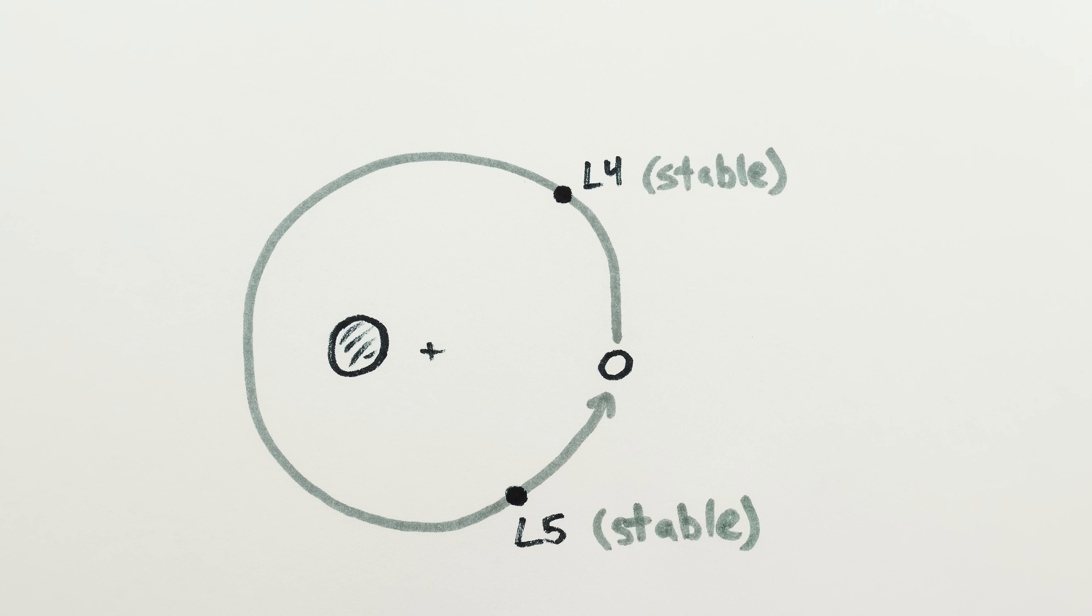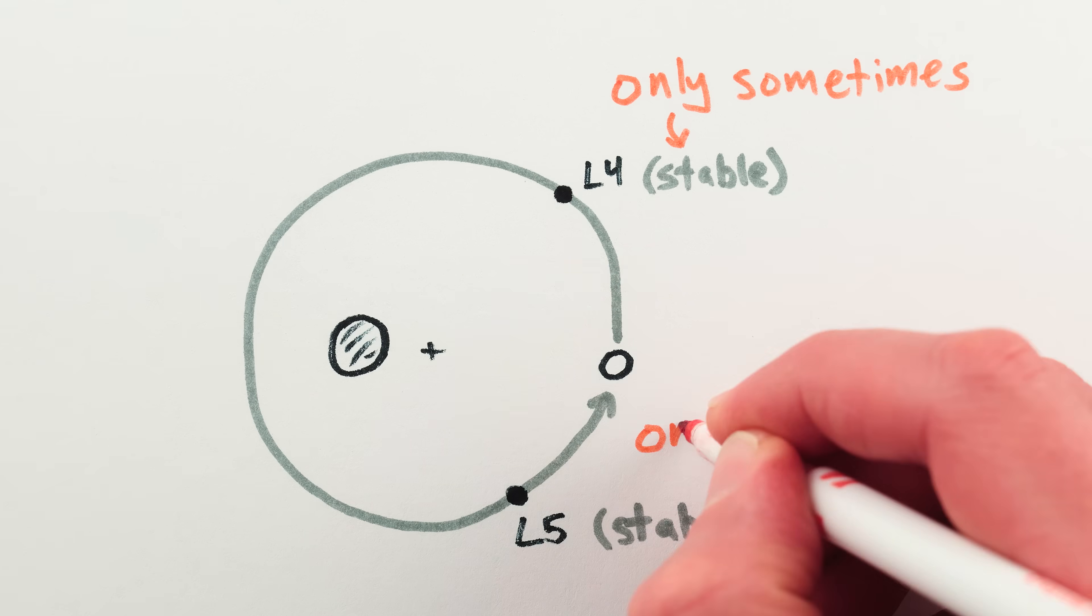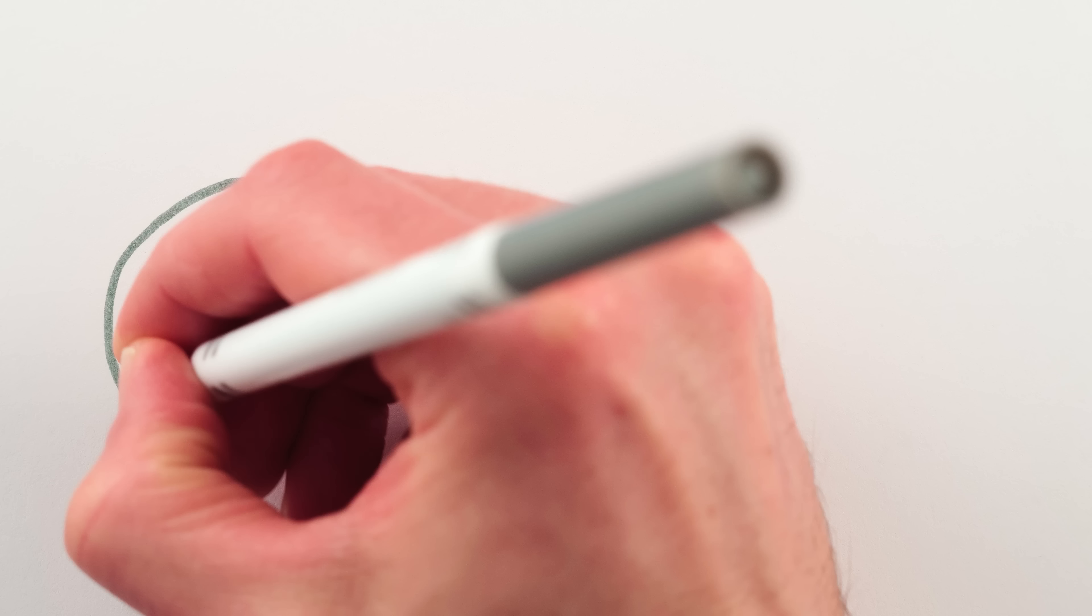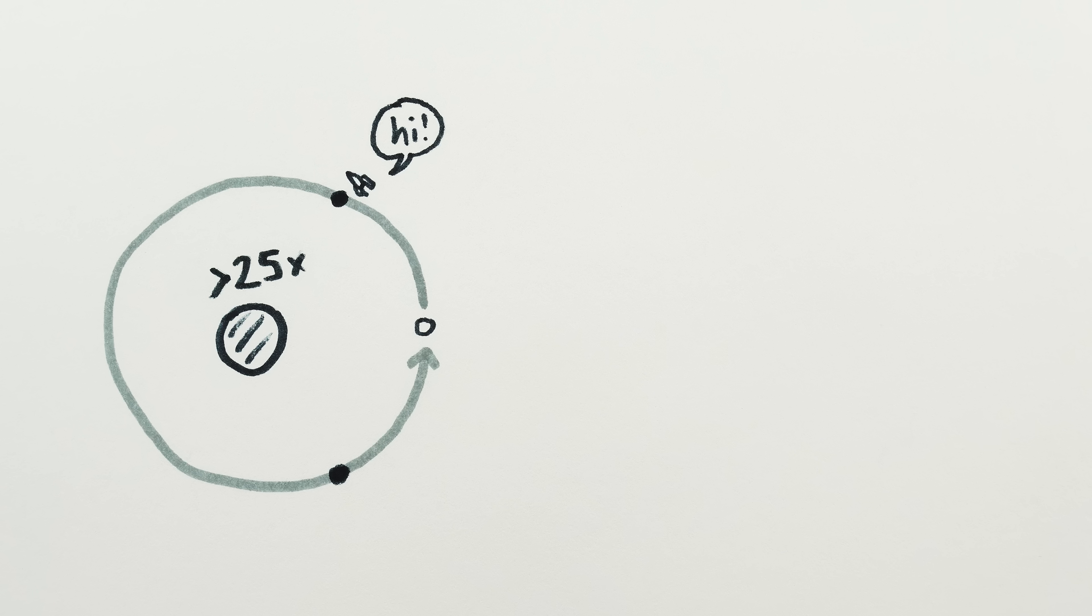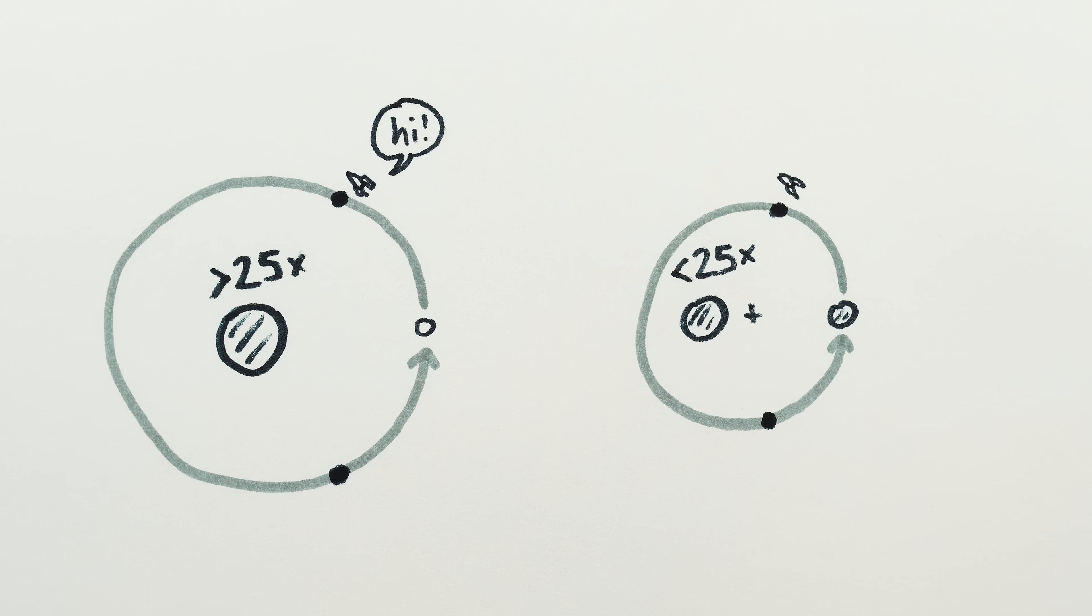But there's a less well-known property of the Trojan points L4 and L5. They're not always stable. Their stability requires the bigger object to be more than 25 times the mass of the smaller one. If the two objects are too close in size, then the L4 and L5 points become unstable like L1, L2, and L3.